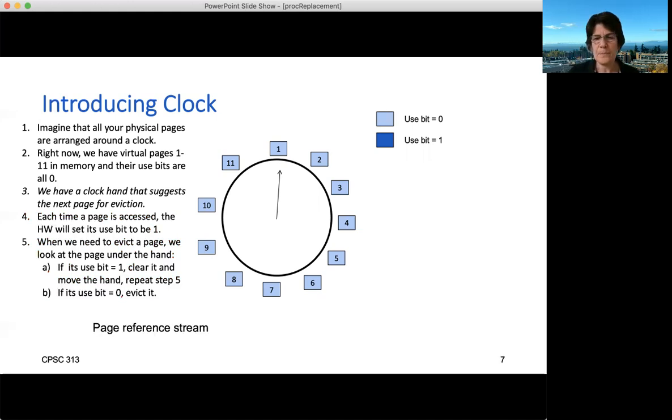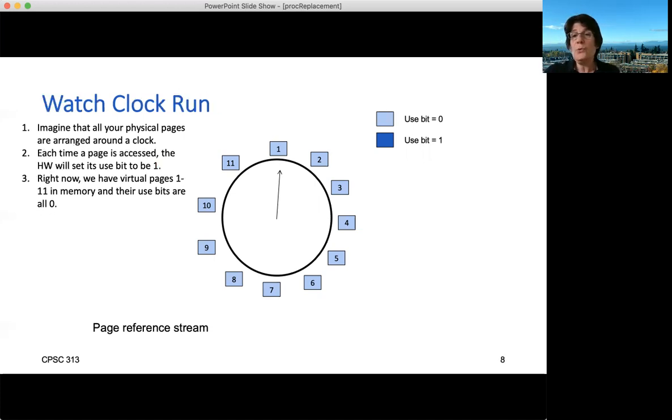So let's watch this in action. I'm going to give you a page reference stream. So these are virtual page numbers of the pages I want to access. And we're going to initialize memory. Our memory is teeny here. It has exactly 11 pages in it. And it is currently holding virtual pages one through 11. And what I'm going to do is go through an access pattern and watch what happens to the clock hand. So we're going to start out and touch page one. Page one happens to be in memory, which is great. And what that's going to do is set the use bit.